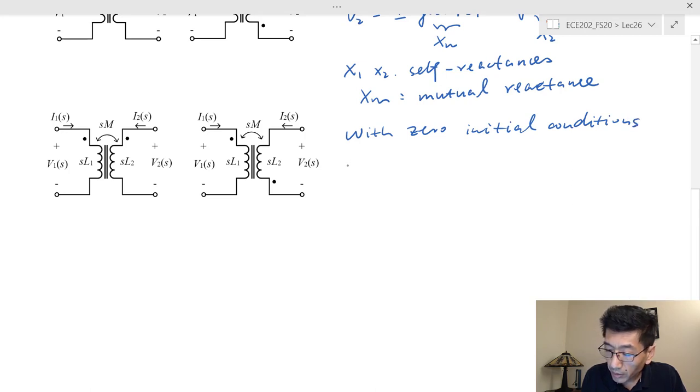And then we have in S domain V1(s) is going to be equal sL1, this is like an impedance self-impedance, times I1(s).